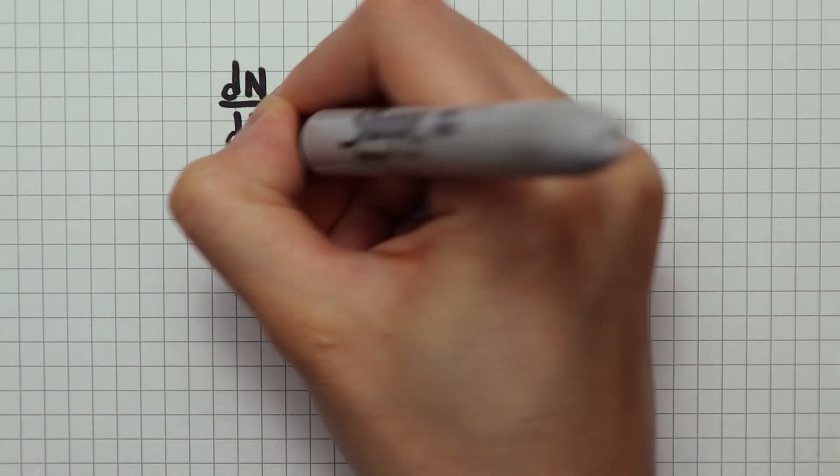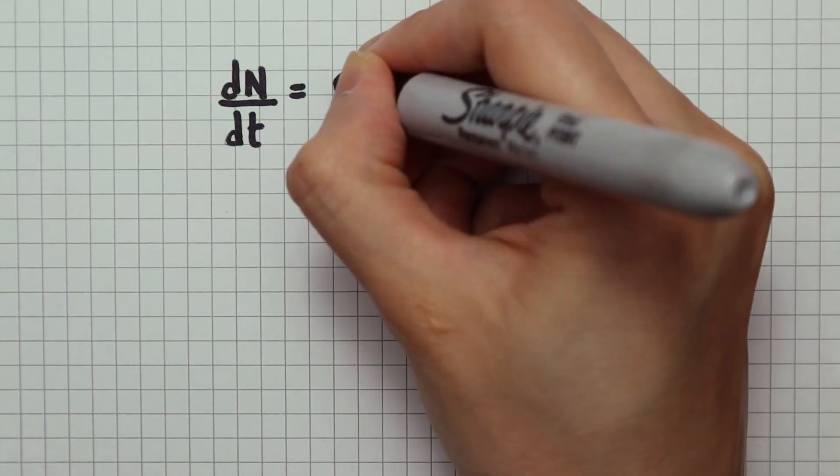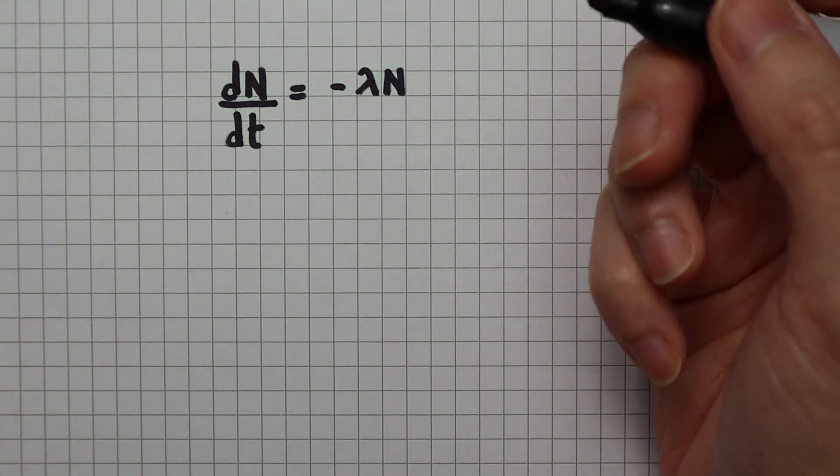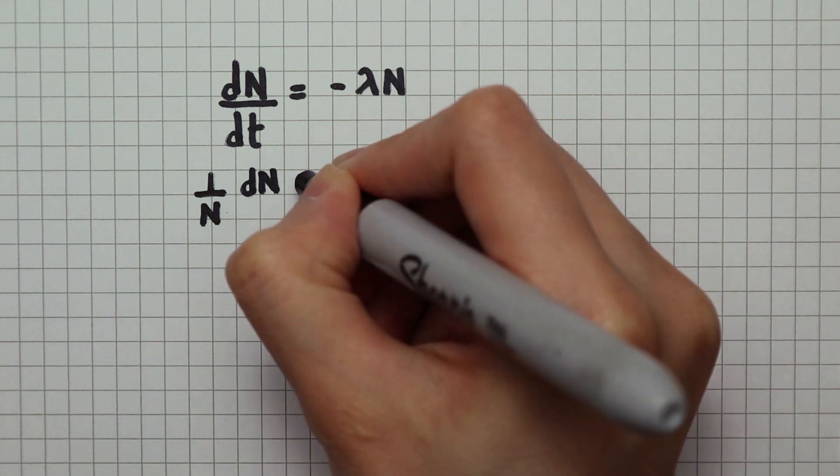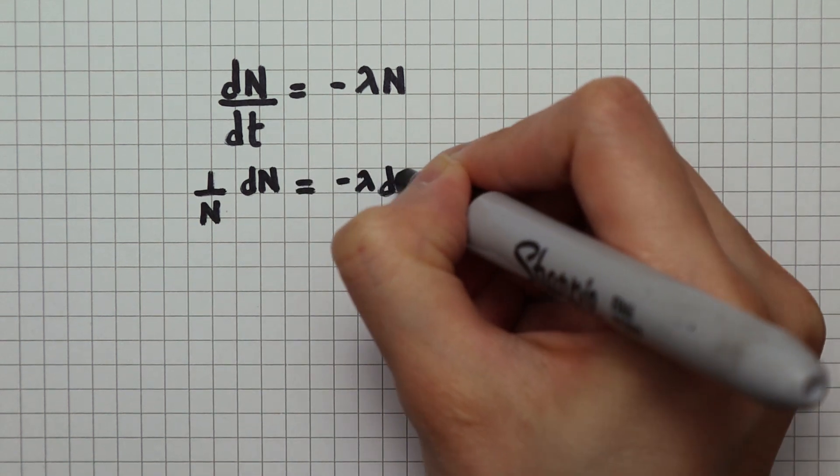I'm going to use integration here, which is not required for A-level physics, but it will help us derive the exponential decay equation. Before we can do anything, we have to put n with dn and bring dt to the other side.